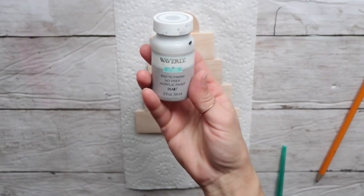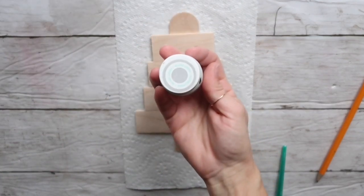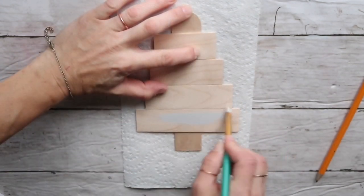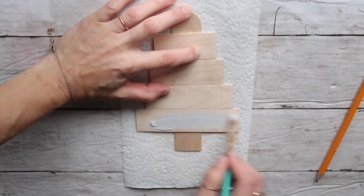When all this is glued, I am taking Waverly chalk paint in color Silver Lining and I'm going to heavily distress this mini Christmas tree.